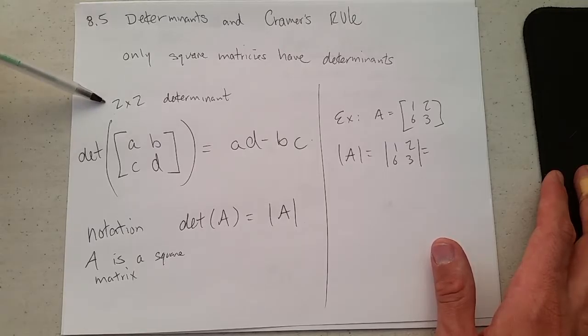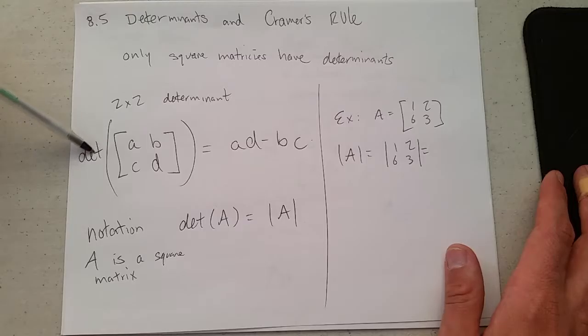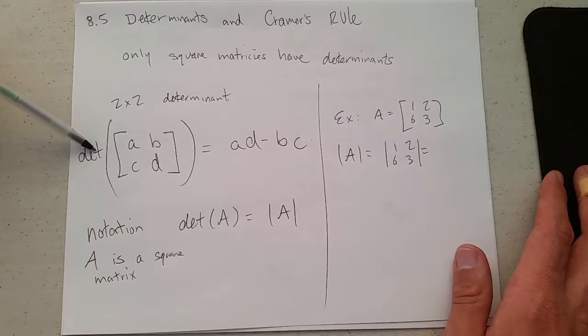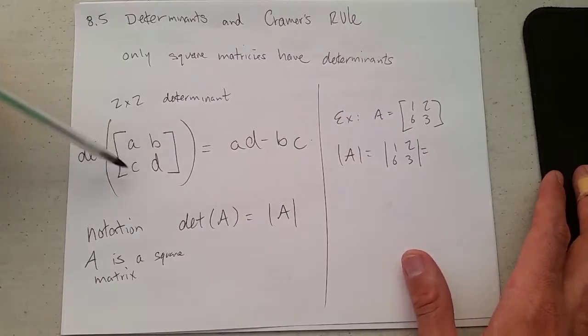We'll start out with a 2 by 2 determinant. There's a nice formula for it. The way we write determinant, we're just going to write DET for determinant of ABCD.